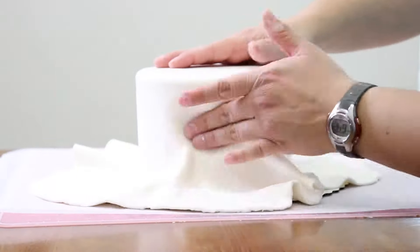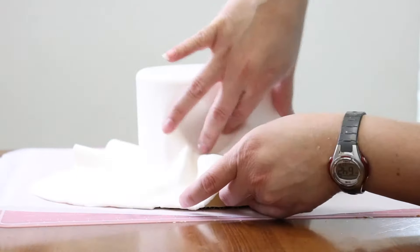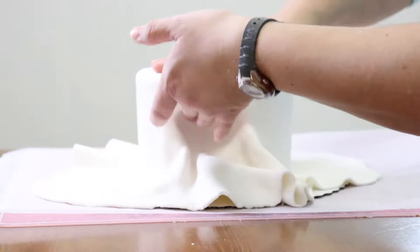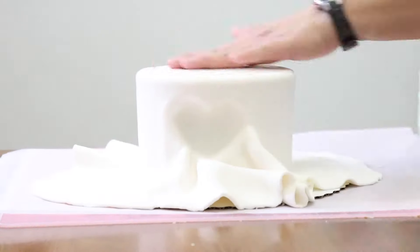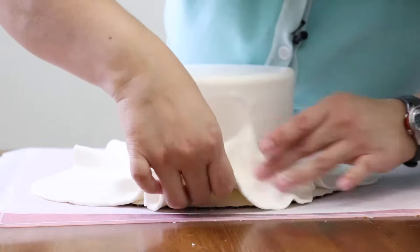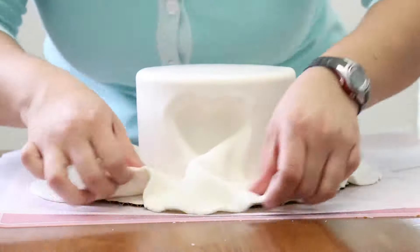You might get air bubbles in between the fondant and the cake. Use a pin to get the air out. With your fingers, just rub the little hole you made with the pin and it shall disappear.